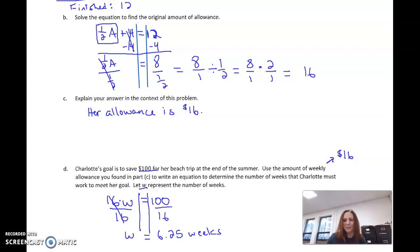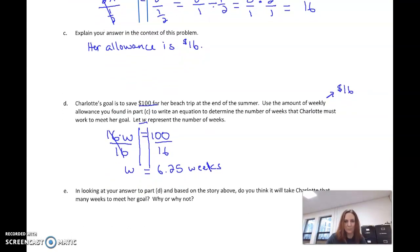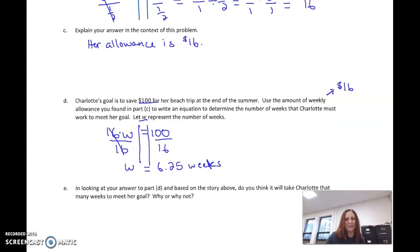So what does that mean? I don't know about you guys, but I don't think really we get allowance like 0.25 or a quarter of the week. You get it maybe every Monday if you get an allowance. You're not going to say, hey, it's been like one-fourth of the week here, Dad. Can I have some more money? So how many weeks is it going to take her? Is it going to take her 6 weeks? Or is it going to take her 7 weeks?